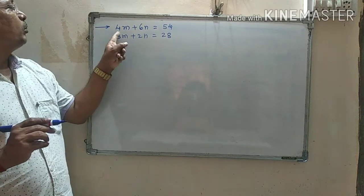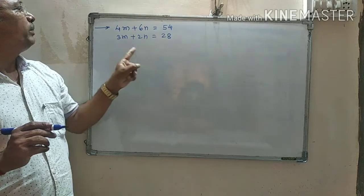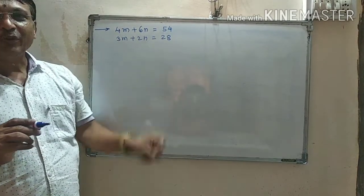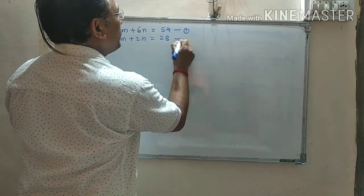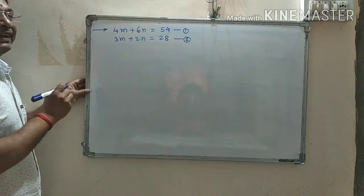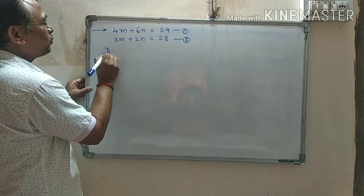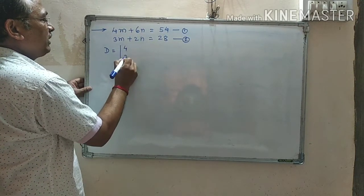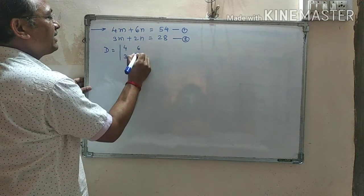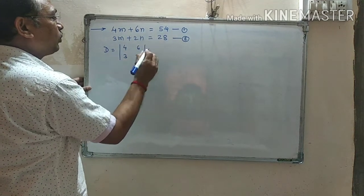One more example: 4M plus 6N is equal to 54, and 3M plus 2N is equal to 28. Let's solve this by Cramer's Rule. This is equation number 1, this is equation number 2. To solve by Cramer's Rule, first we calculate D. D is equal to M's coefficients 4 and 3, and N's coefficients 6 and 2. Okay?